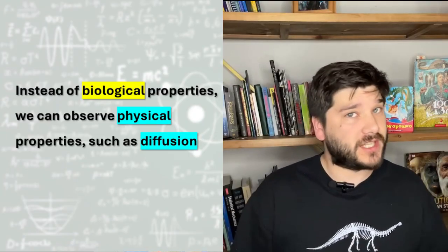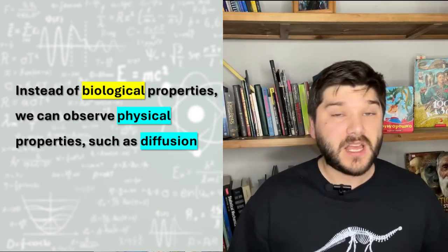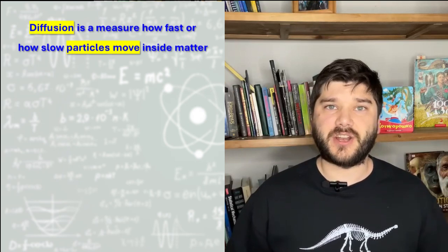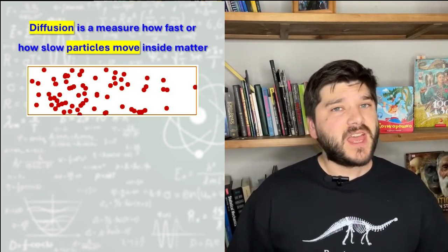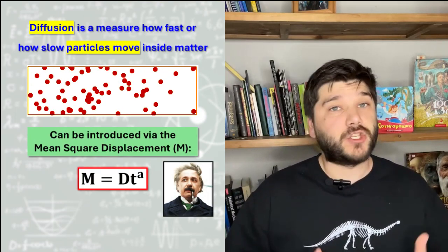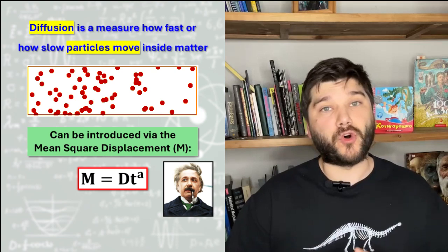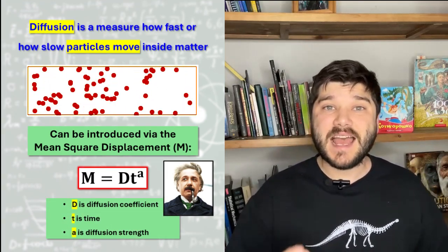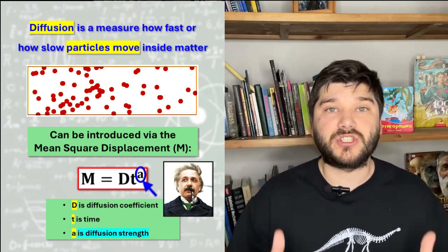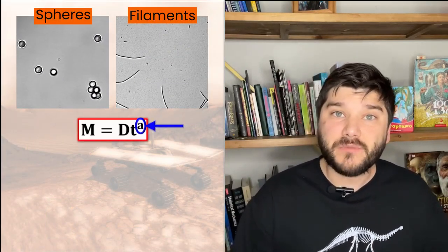Instead of biologically or genetically related features, such as reproducibility and mutation, we can observe the physical properties of these alien particles — for example, diffusion. Diffusion is the feature characterizing movement or motility of any object. It tells us how fast or how organized particles move in the media. Mathematically speaking, diffusion can be introduced via the mean square displacement, also known as the Einstein formula. D is the diffusion coefficient, t is time, and a is the diffusion exponent or diffusion strength. This parameter a defines how different particle positions correlate with each other at different moments of time.